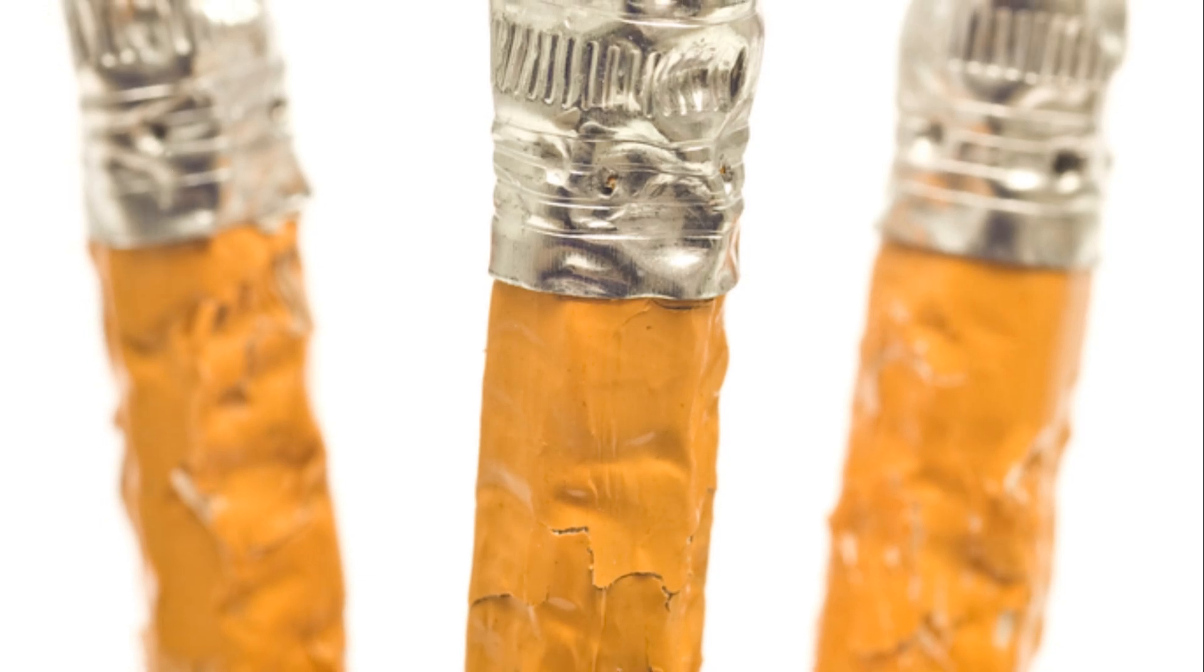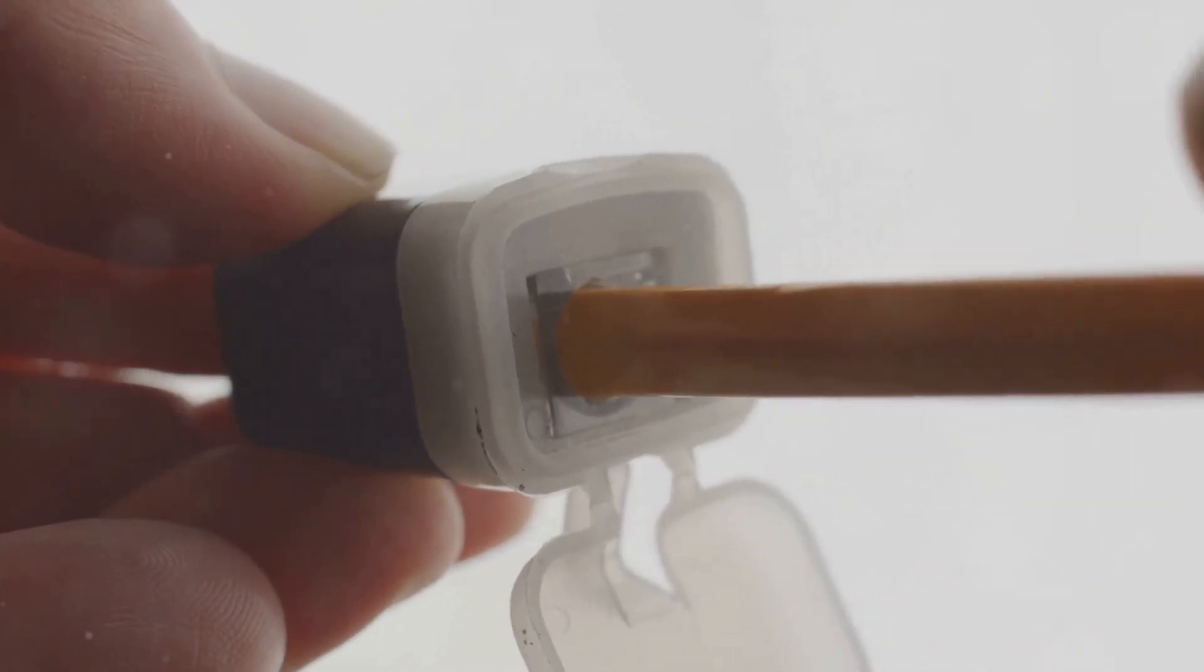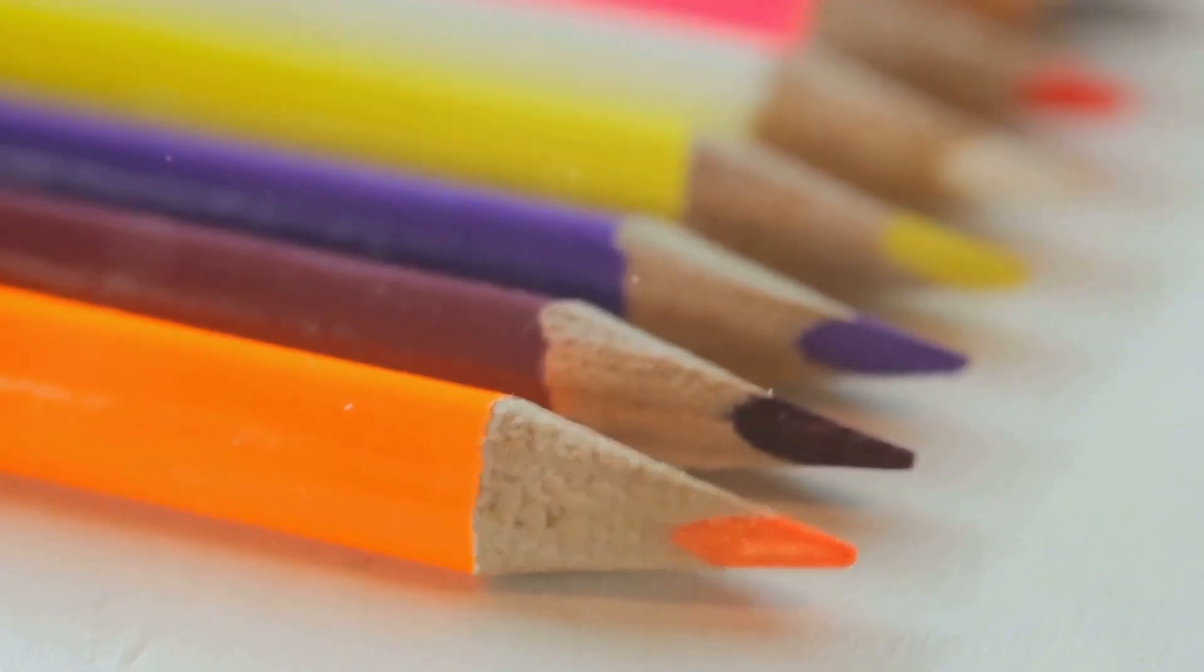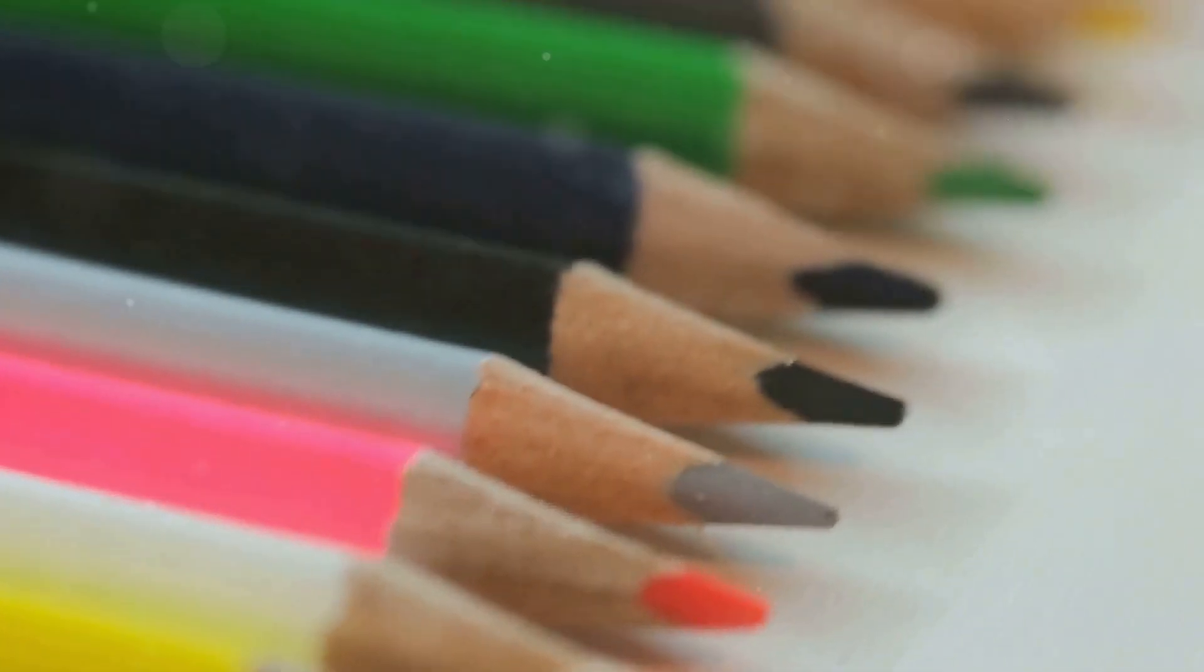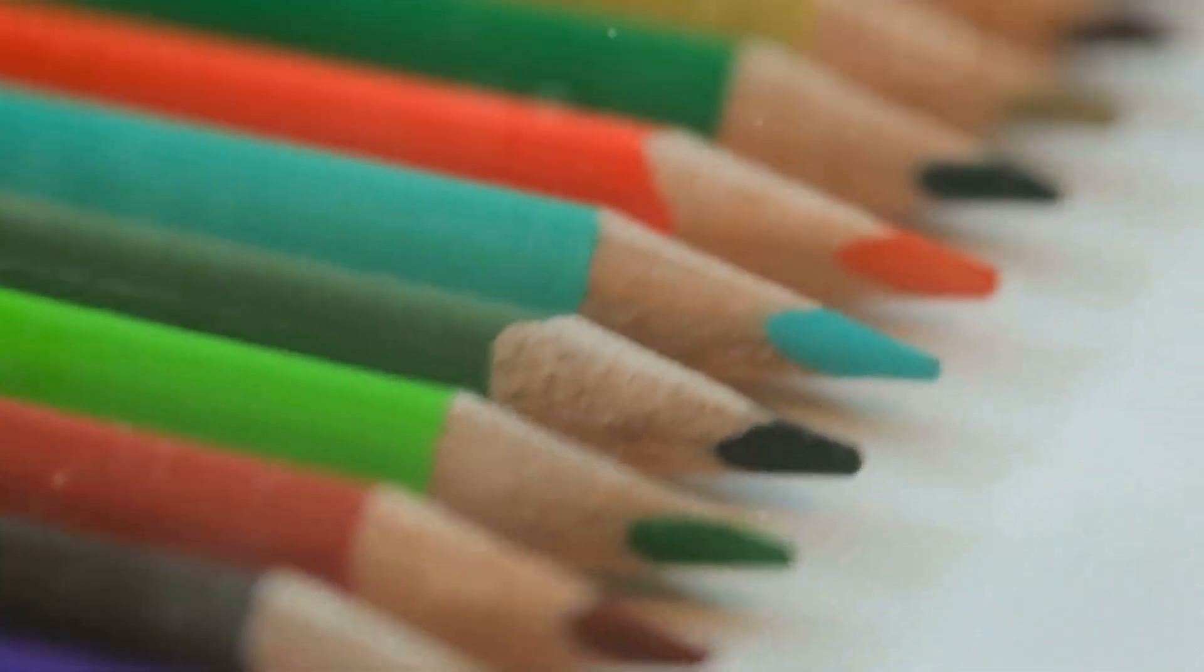Erasers, held in place by a metal ferrule, are added to one end of many pencils, adding to their versatility. Finally, the pencils are sharpened, revealing the smooth black tip of the lead within. This final step marks the completion of their transformation, ready to be shipped to eager writers and artists around the world.